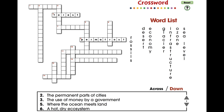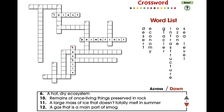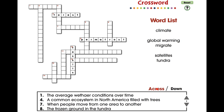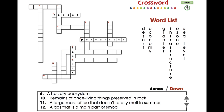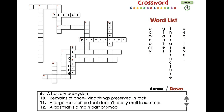Drag a word from the list to its correct position in the puzzle. Use the arrows to scroll through all the clues. Switch between across and down clues and words. Visit ccpinteractive.com for extended versions of our products and to watch more demo videos.